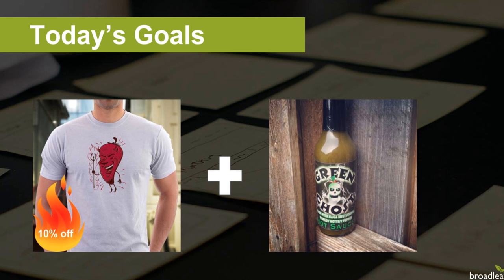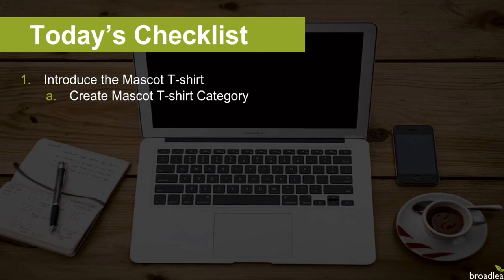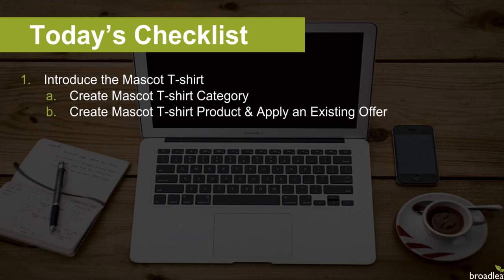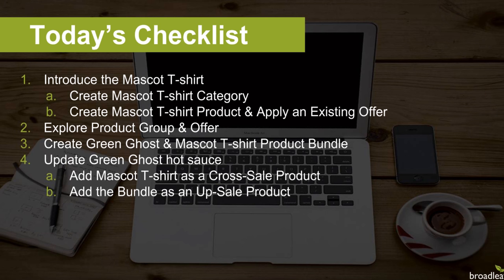To guide us through this process, here is the set of tasks we'll need to complete through the Broadleaf admin. First, we'll create a new mascot category, then create the mascot t-shirt product with product options to generate SKUs and apply an existing 10% off offer. Next, we'll explore a pre-configured t-shirt product group and see how it's used with our offer. Then we'll create a Green Ghost and mascot t-shirt bundle, update Green Ghost for cross and upsell, and finally submit our work for approval — none of our changes will appear live until they've been approved and deployed.